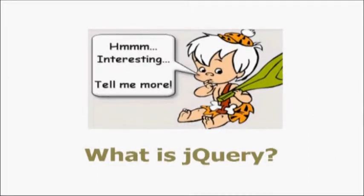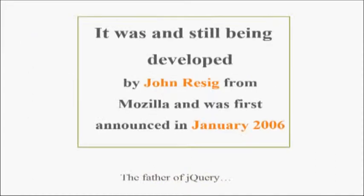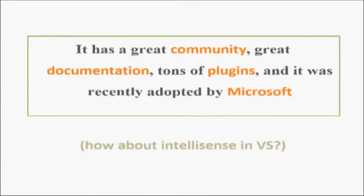So now, what is jQuery? jQuery is a lightweight, open-source JavaScript library that simplifies interaction between HTML and JavaScript. It works like a middle layer between HTML and JavaScript, and provides its methods and selectors so that we can use them directly and interact through HTML. It was developed by John Resig and first announced in 2006. It has a great community, great documentation, and tons of learning resources.